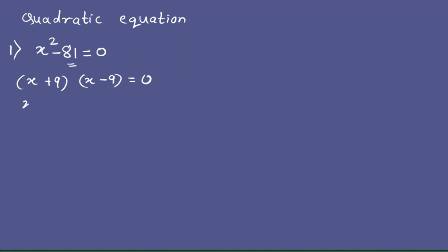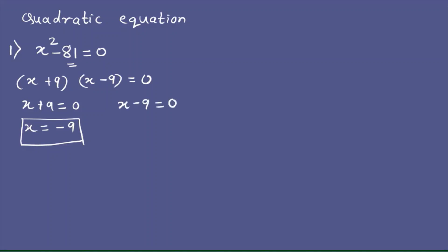When we take x + 9 = 0, then x = -9. When we take x - 9 = 0, then we get x = 9.